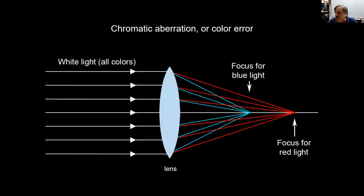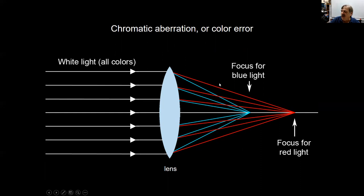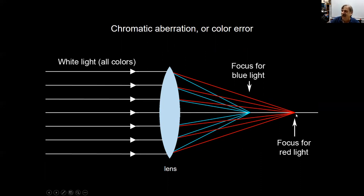A problem with lenses is, of course, the color error, also known as chromatic aberration. Chromatic means color, aberration means error. Basically, it's the same situation as a prism. Glass is transparent to light, but it bends blue light more than it bends red light — it refracts blue light more than red. Most transparent materials are like this. This property is called dispersion. The problem is that the focus for blue light, short wavelength, is different from the focus for red light, long wavelength. So this complicates color photography.